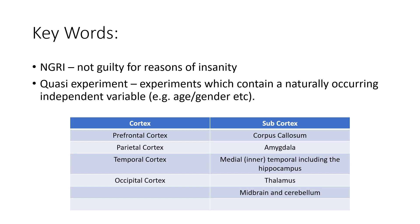In the cortex you have the prefrontal cortex, parietal cortex, temporal cortex and occipital cortex. In the subcortex you have the corpus callosum, the amygdala, the medial temporal including the hippocampus, the thalamus, midbrain and cerebellum. You might remember some of these from previous studies — for example, the corpus callosum from the split-brain study. You don't have to know all of them, but if you're unsure, look them up.